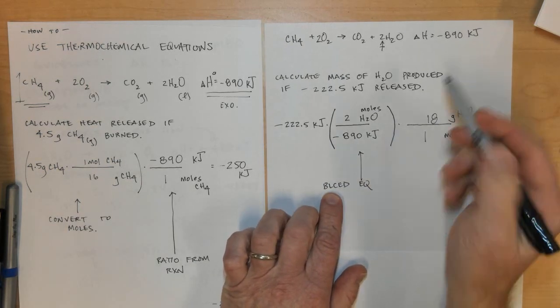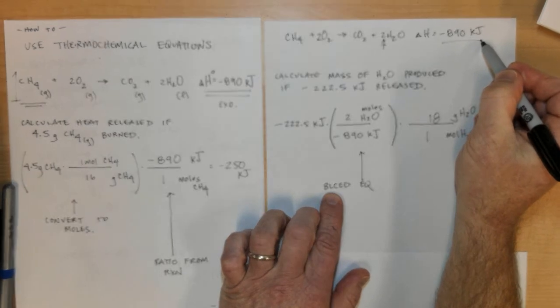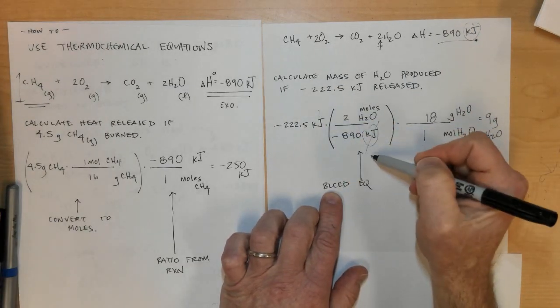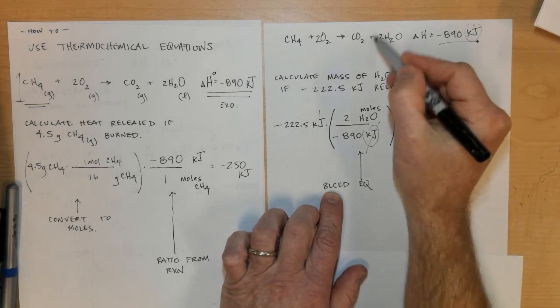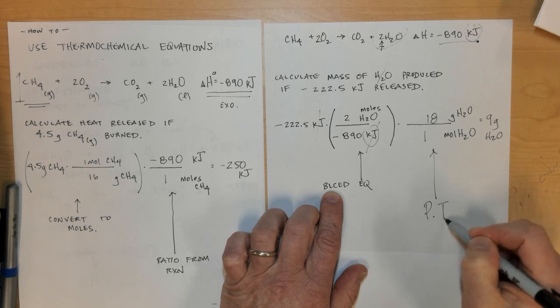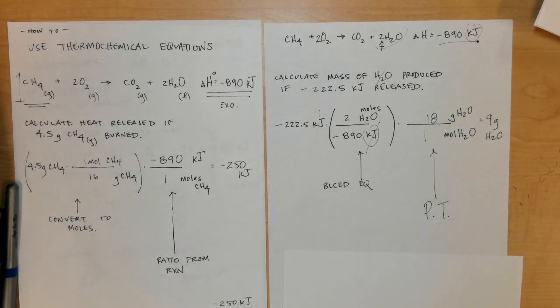Look at the steps that I did. I got this ratio from the balanced thermochemical equation, negative 890 kilojoules. Notice I put my kilojoules units in the position where it's going to cancel and my moles I got from the coefficient in front of H2O. Then the last step I just did some converting from moles to grams from the periodic table.